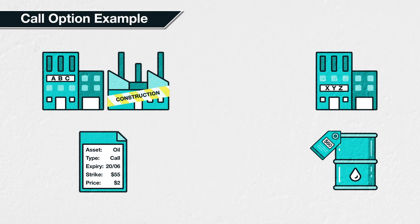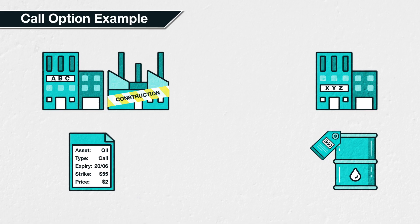ABC has used the call option as a kind of insurance against the price of oil increasing in future. This is valuable to them because the price of oil could potentially increase to a point that makes their project unprofitable. If the price of oil increases before they are ready to purchase it on June 20th, their project may no longer be very attractive, or even profitable at all. By purchasing the call option, they guarantee themselves the option of buying oil at a price that makes their project profitable.